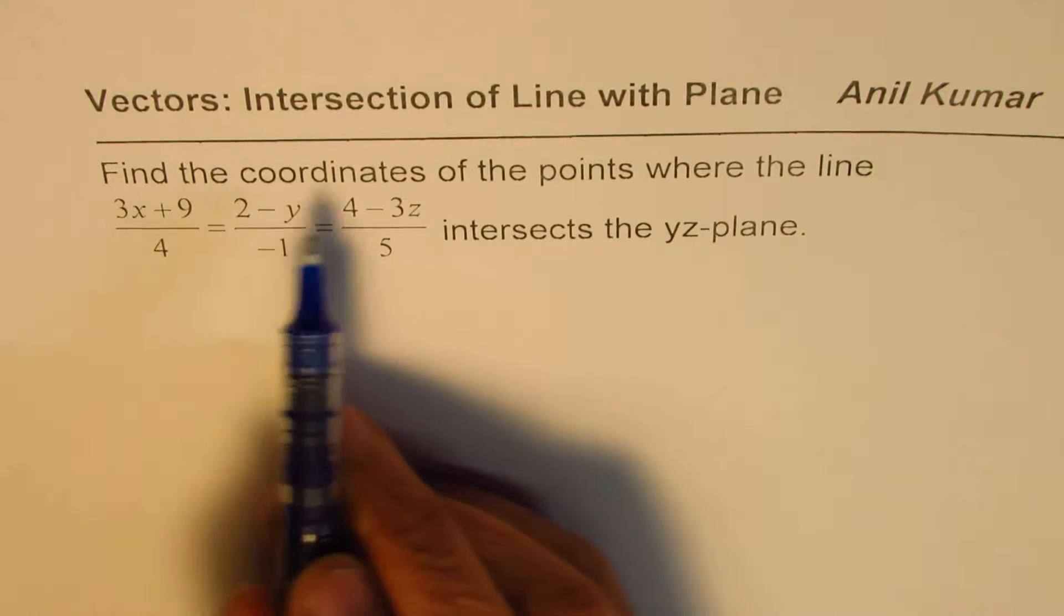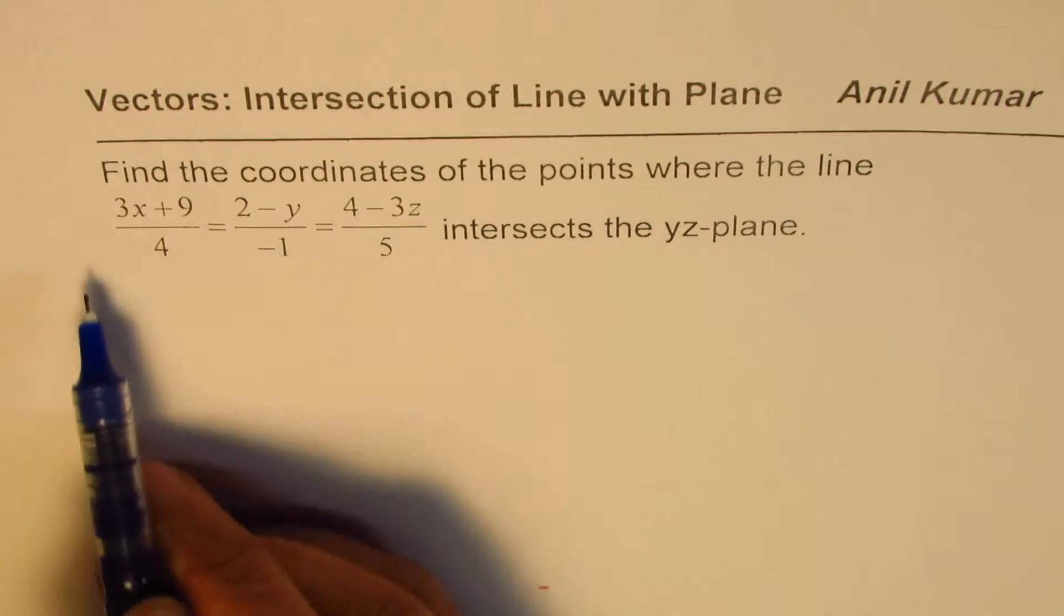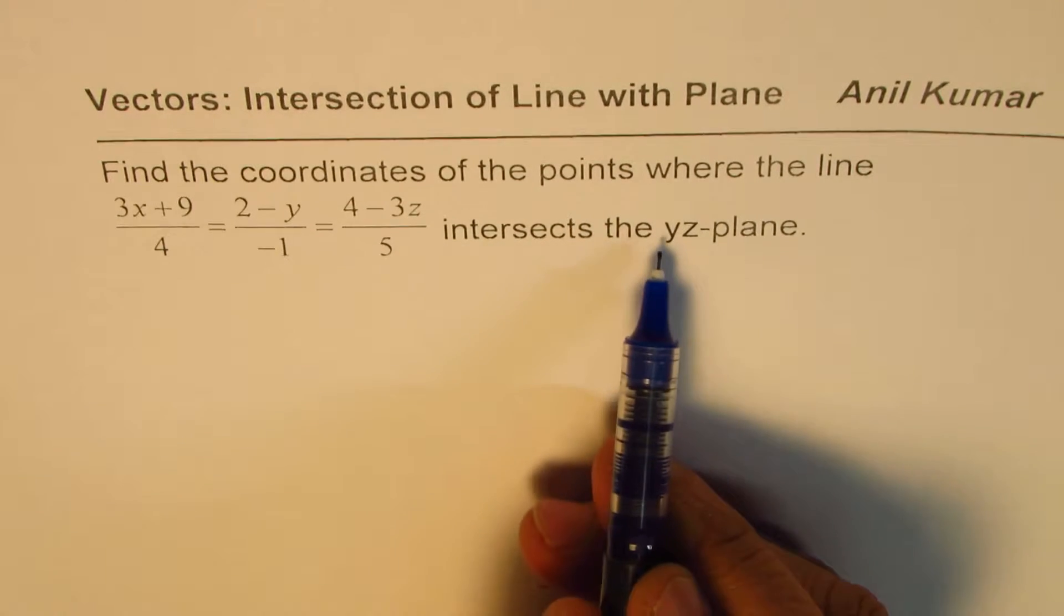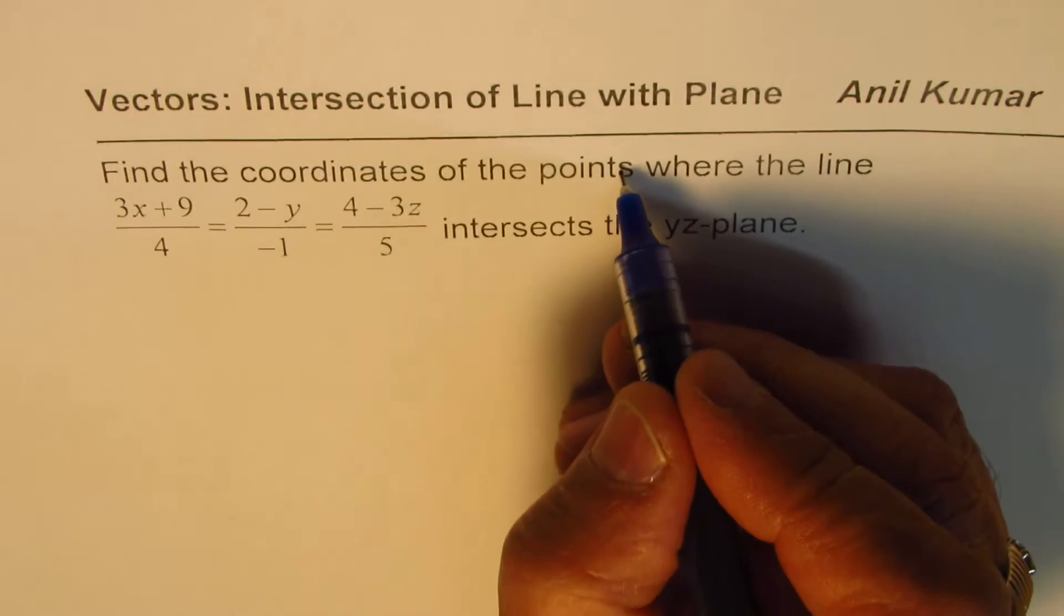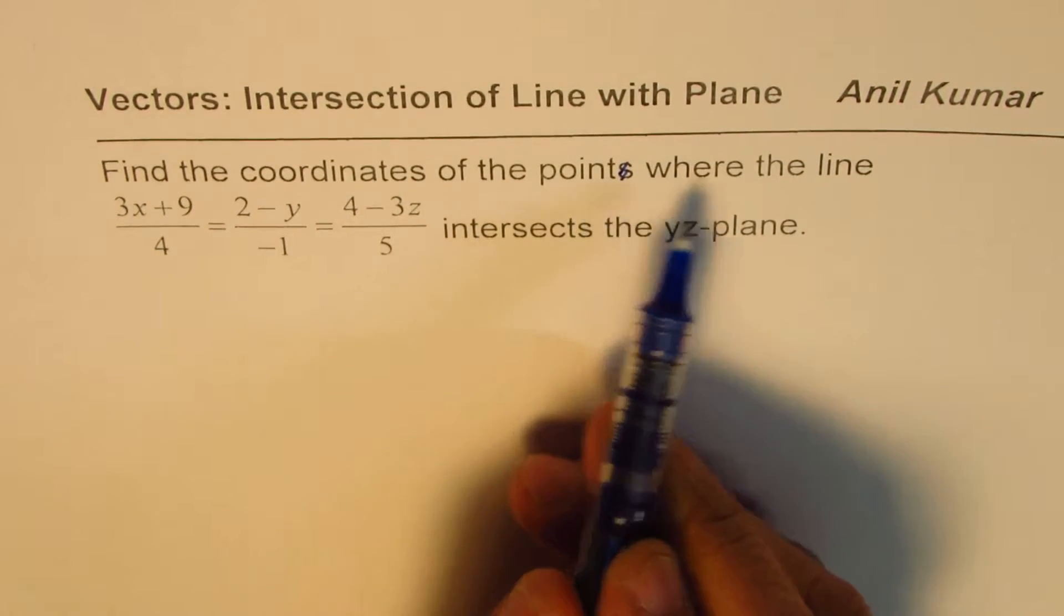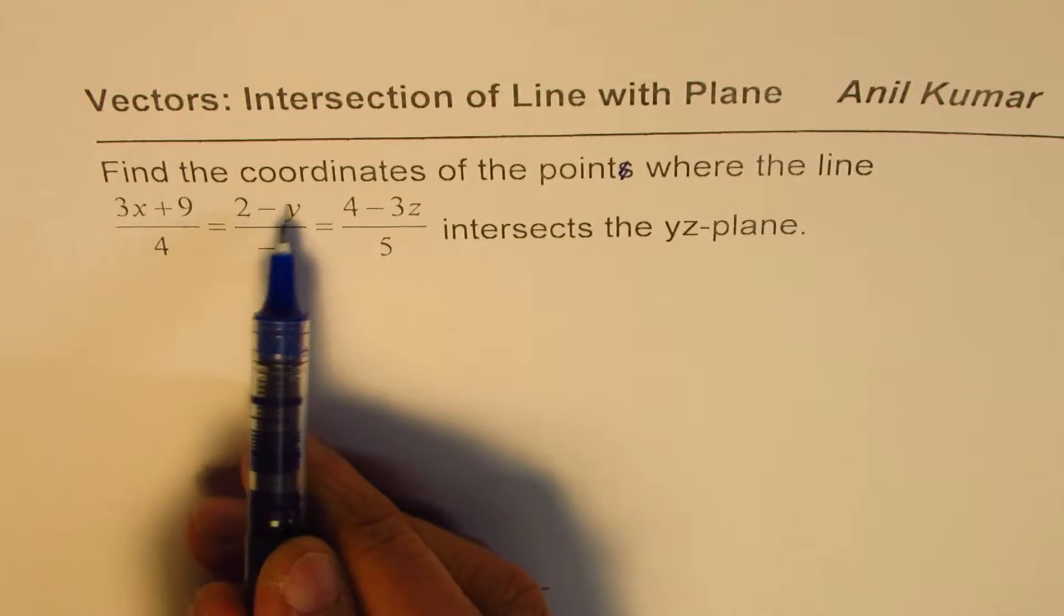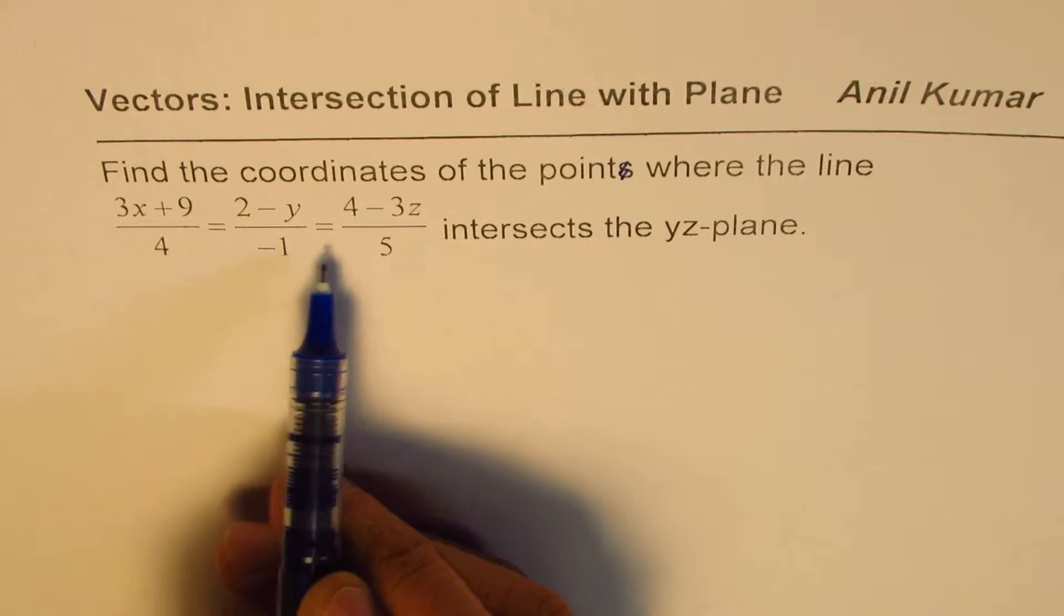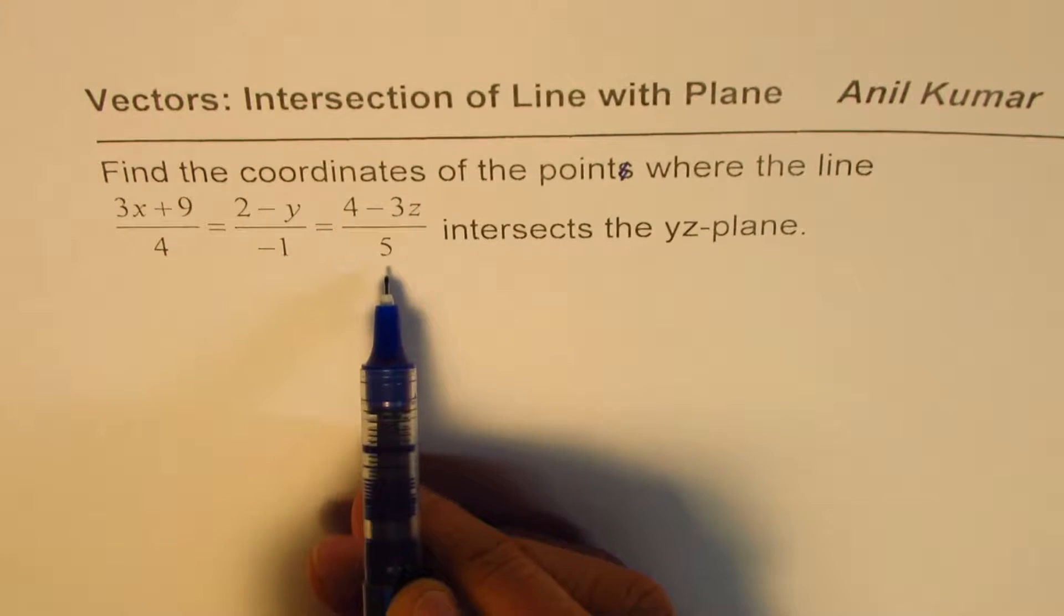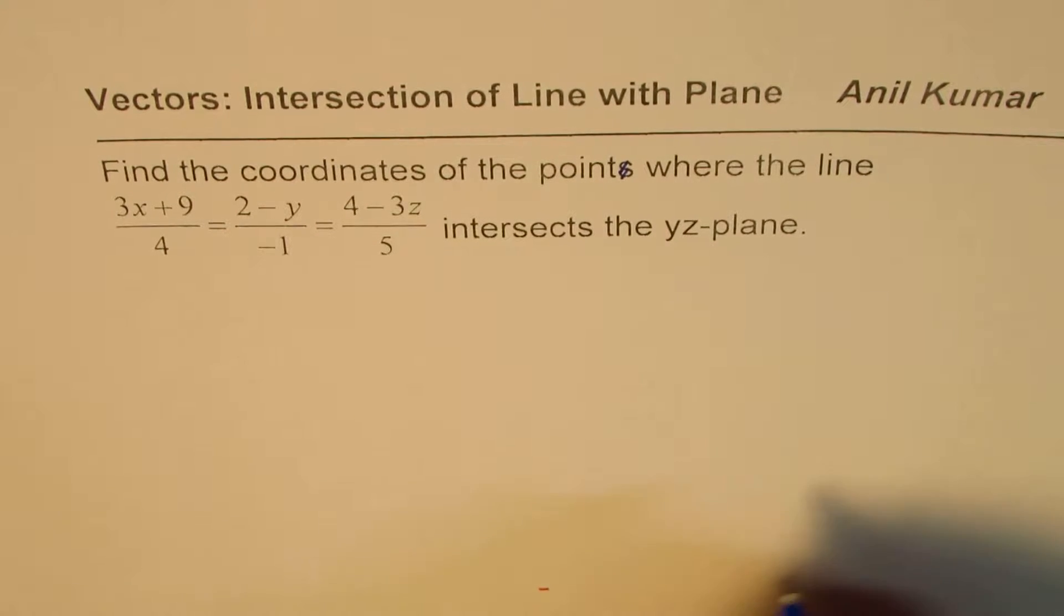The question here is find the coordinates of the point where the line intersects yz plane. Find the coordinates of the point where the line (3x+9)/4 = (2-y)/(-1) = (4-3z)/5 intersects yz plane.